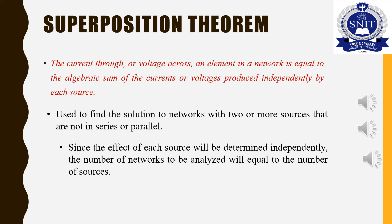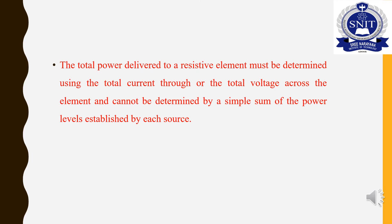Since the effect of each source will be determined independently, the number of networks to be analyzed will be equal to the number of sources. The total power delivered to a resistive element must be determined using the total current through or the total voltage across the element, and cannot be determined by a simple sum of the power levels established by each source. We will solve the current and voltage using the algebraic sum in the superposition theorem.